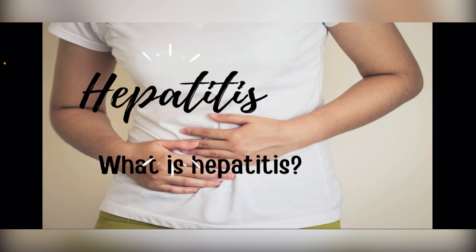Some types of hepatitis are preventable through vaccination. Hepatitis B is a serious liver infection caused by the hepatitis B virus and is easily preventable by vaccination. Hepatitis C is a serious liver infection caused by a virus that attacks the liver and leads to liver inflammation. We also have alcoholic hepatitis, which is a liver inflammation caused by drinking too much alcohol.